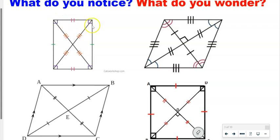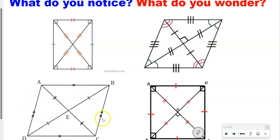Over here I had right angles — you guys should have seen those before. We have these arcs that speak of congruence in angles. And then we have these arrows on these sides — these mean that these sides are parallel. A and B, and D and C down here are parallel.